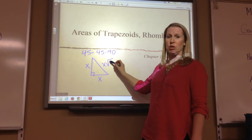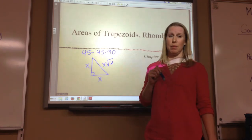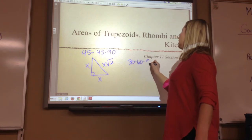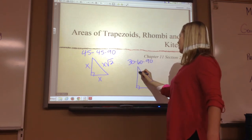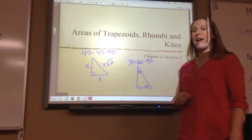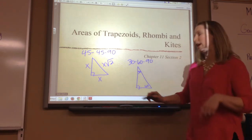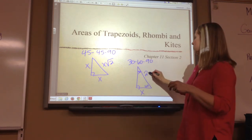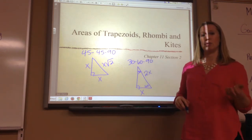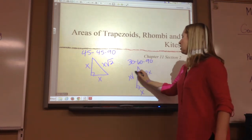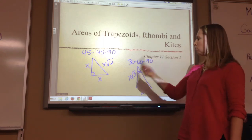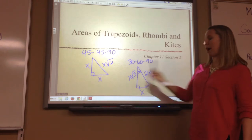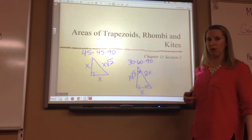So if you know the hypotenuse, to go backwards you have to divide by radical 2. On a 30-60-90, everything revolves around the short leg. The hypotenuse is times 2, the long leg is times radical 3. So I remember 1, 2, radical 3. If you have to go backwards from the hypotenuse, divide by 2. If you have to go backwards from the long leg, divide by radical 3.